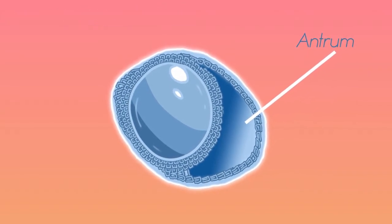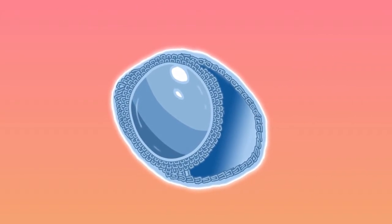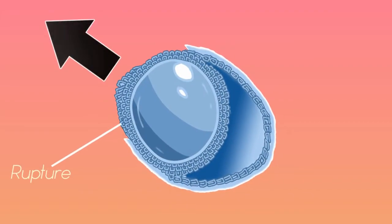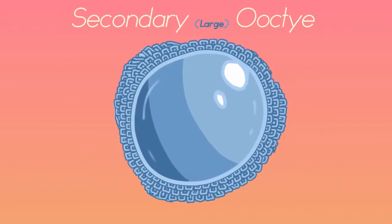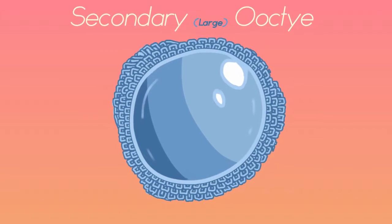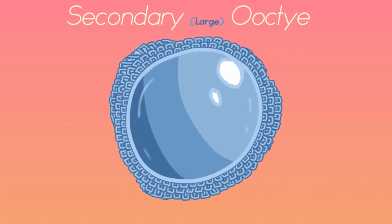During ovulation, the oocyte is released from the ovary that contained it through a rupture in the mature follicle. It is still surrounded by some granulosa cells. Once released, the secondary oocyte has entered meiosis II.